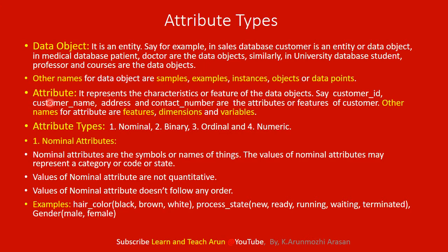An Attribute is a property, characteristic, or feature of a data object. For example, for a customer entity, the attributes would be customer identity, customer name, address, and contact number — these are the characteristics of that customer entity. Attributes can also be called by other names: features, dimensions, or variables.